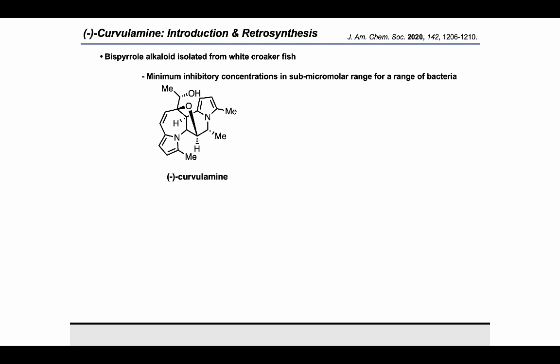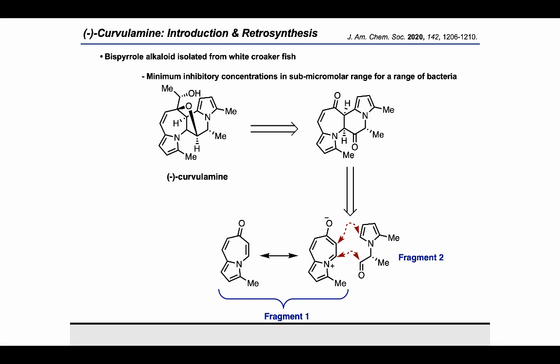In a retrosynthetic sense, the authors imagined that it might be possible to simplify the target if it could arise from a diketone like the one shown. In order to make the synthesis as convergent as possible, they proposed this diketone might be accessible from two smaller fragments, which we'll call fragment 1 and fragment 2. Fragment 1 is a 10-pi aromatic heterocycle, as shown in the resonance form on the right. They imagined that combining these two fragments together might form the core of the final target.